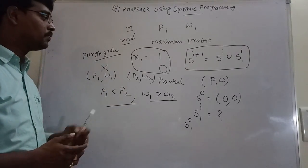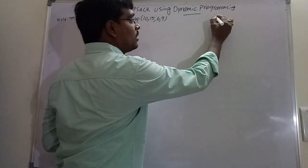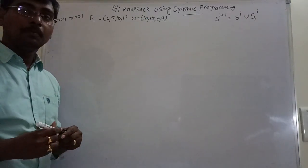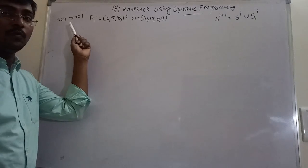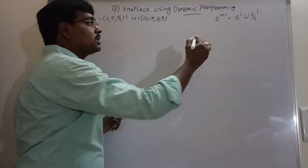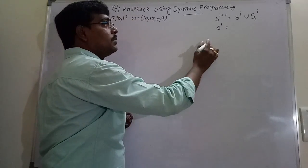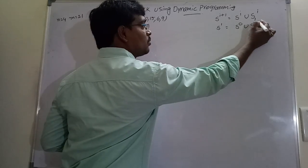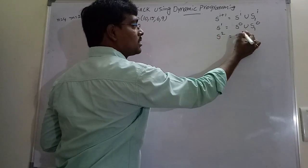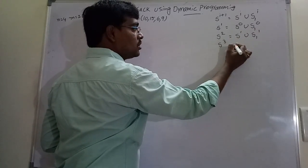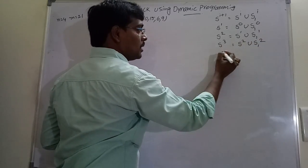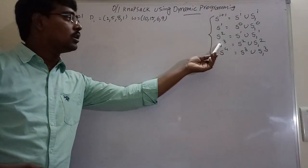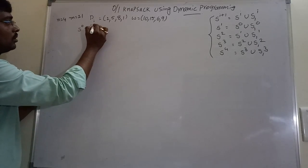Now consider an example. The formula is S^(i+1) = S^i ∪ S1^i. We have N=4, so calculate up to 4 terms: S^1 = S^0 ∪ S1^0, S^2 = S^1 ∪ S1^1, S^3 = S^2 ∪ S1^2, S^4 = S^3 ∪ S1^3. Initially, S^0 = {(0,0)} — no object is placed, so profit is 0 and weight is 0.